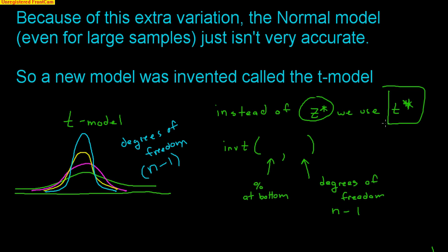We use invT on our calculator to find T*. Go to second VARS — right underneath invNorm, you'll find invT. For a 95% confidence interval, input 0.025 for the lower tail percentage, followed by your degrees of freedom. For our bullfrog sample of 50, that's 49 degrees of freedom. Using invT(0.025, 49), we get a T* of about 2.0096.